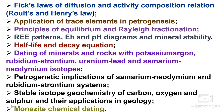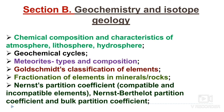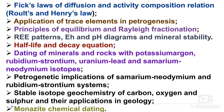Petrogenetic implications of samarium-neodymium and rubidium-strontium systems, stable isotope geochemistry of carbon, oxygen, and sulfur and their application in geology, and monazite chemical dating methods are included. Some topics were previously in the syllabus and some are new. The syllabus is lengthy but if you have time, revise everything. The meteorite part needs to be covered thoroughly, the Goldschmidt classification, application of trace elements, Eh-pH diagram, half-life, decay equation, and one method of dating will likely be asked in the exams.